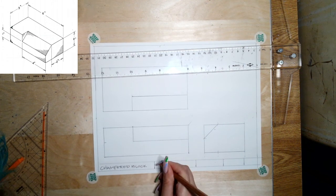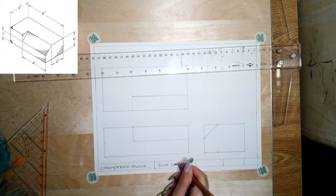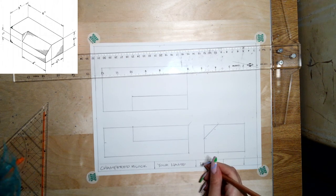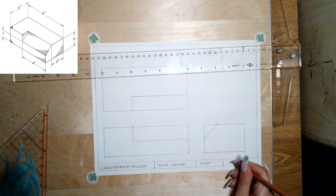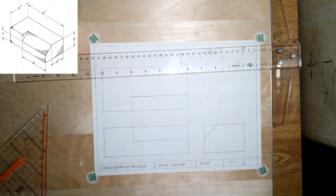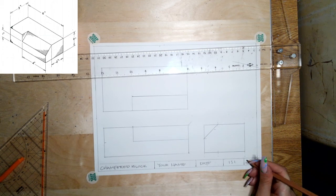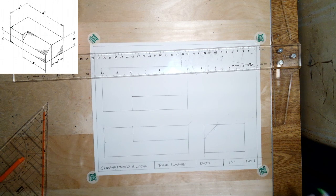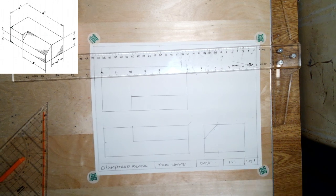And then you'll put your name, the date that you drew this on, the scale you drew it at. So again, we did this one-to-one. One inch on paper is one inch in real life. And how many drawings are associated with the chamfered block. This is drawing one of one. Let's clean up that title block a little bit.